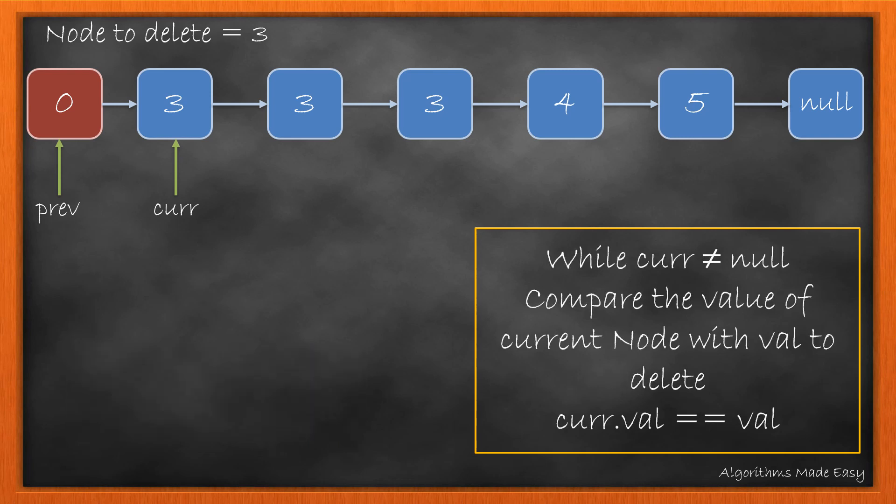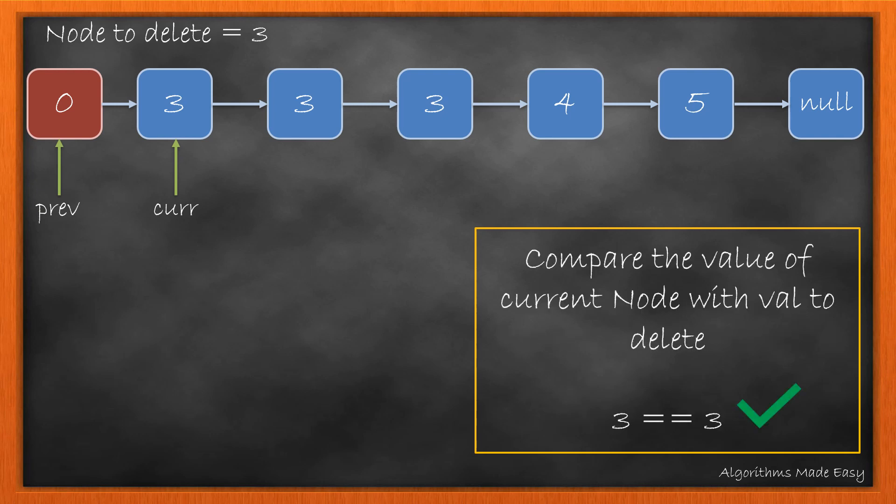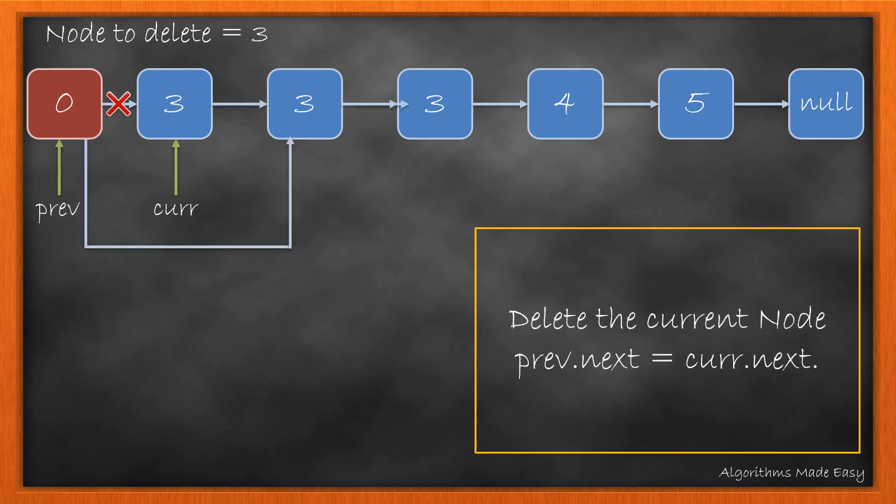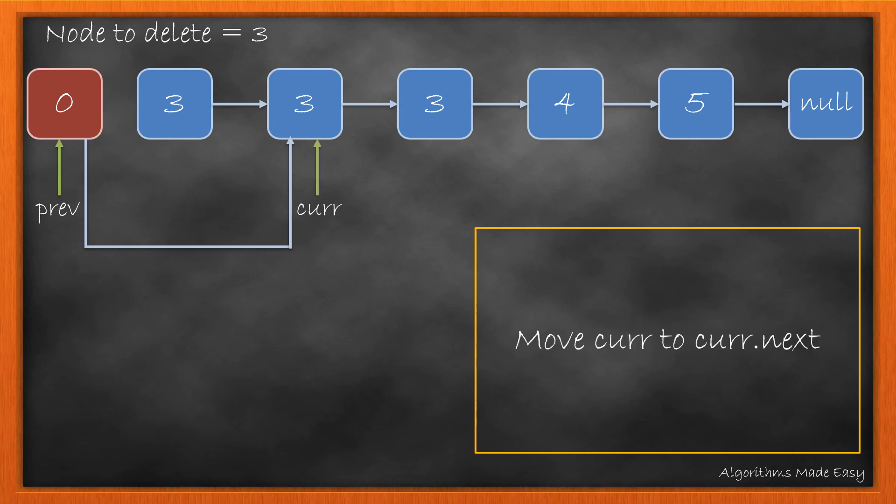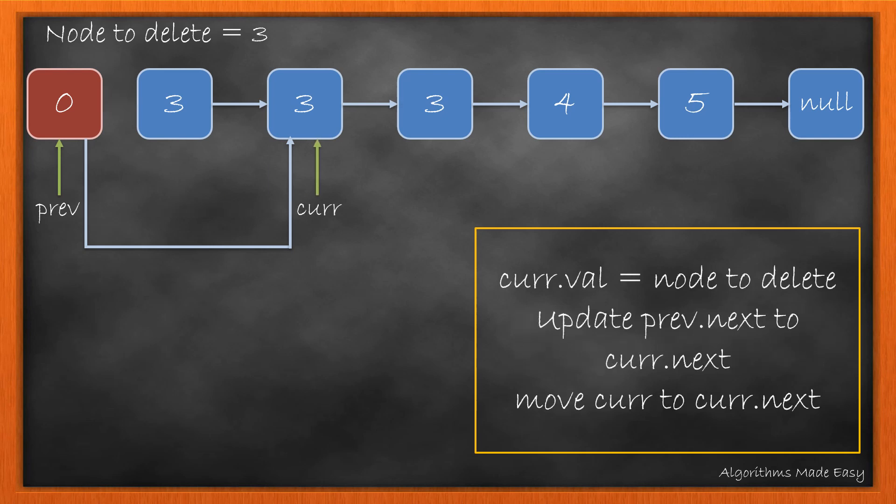We will now iterate over the list till the node at the current pointer is not null. And while iterating, we will see if the node is the one to be deleted. As here it is, we will delete the current node by updating the pointers. We will update the next of its predecessor to point to the next of the current node. We will also move the current to the next node. We will again do the same as the current node value is equal to the value that needs to be deleted.